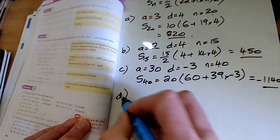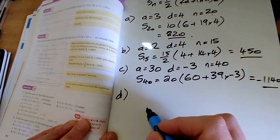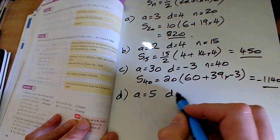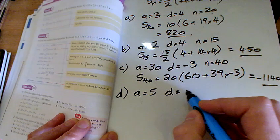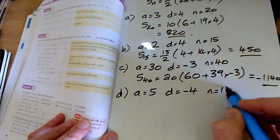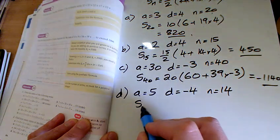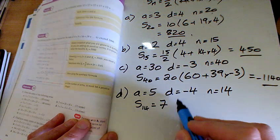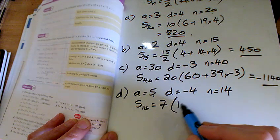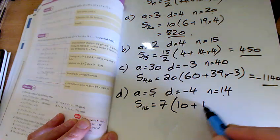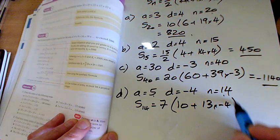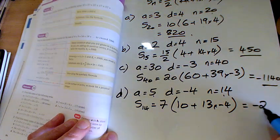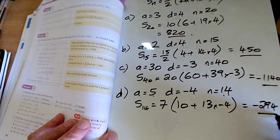And the last one for this video, and then I'll stop, is a is 5. The difference this time, going down by 4 each time, and you've got 14 terms. And so the sum of 14 of them. 14 divided by 2 is 7. 2a's are 10, plus 13 times minus 4. So that's minus 42 here. Minus 42 times 7 is minus 294.